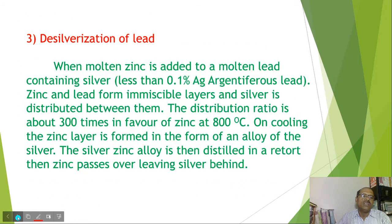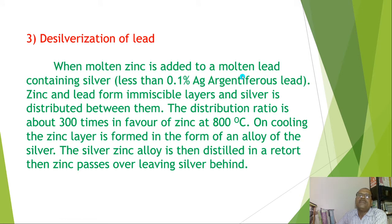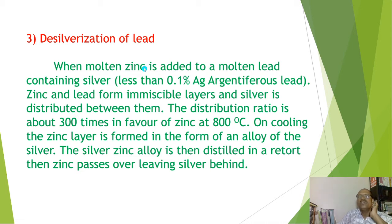The next application of distribution law is desilverization of lead. In this case, argentiferous lead — having less than 0.1% silver — is melted, and the molten mass of lead and molten mass of zinc are shaken with each other. After shaking and settling, most of the silver from the argentiferous lead gets distributed into the molten zinc mass, because the distribution ratio is more in favor of molten zinc. Whatever quantity of silver is present in the argentiferous lead gets distributed into the molten zinc.